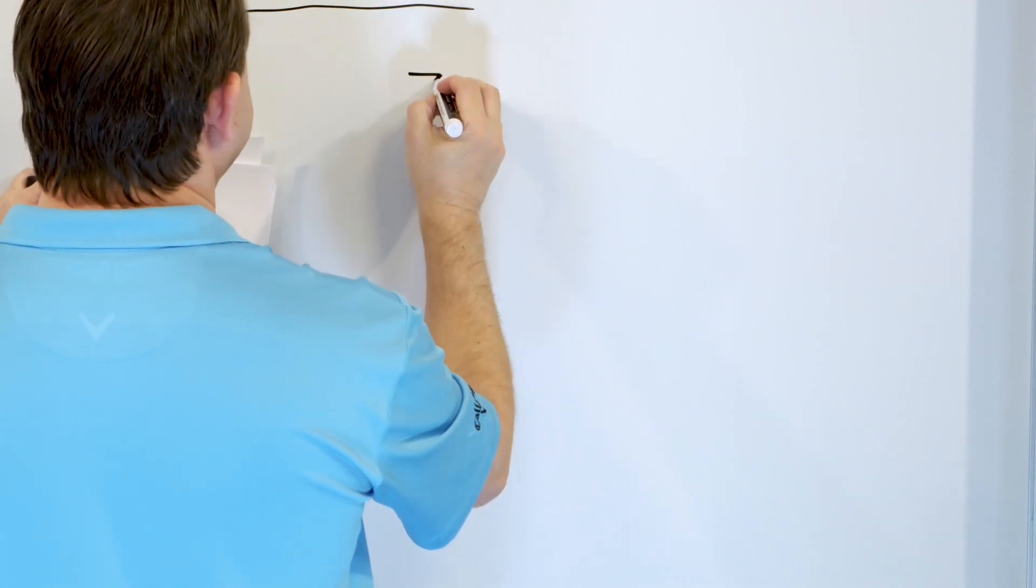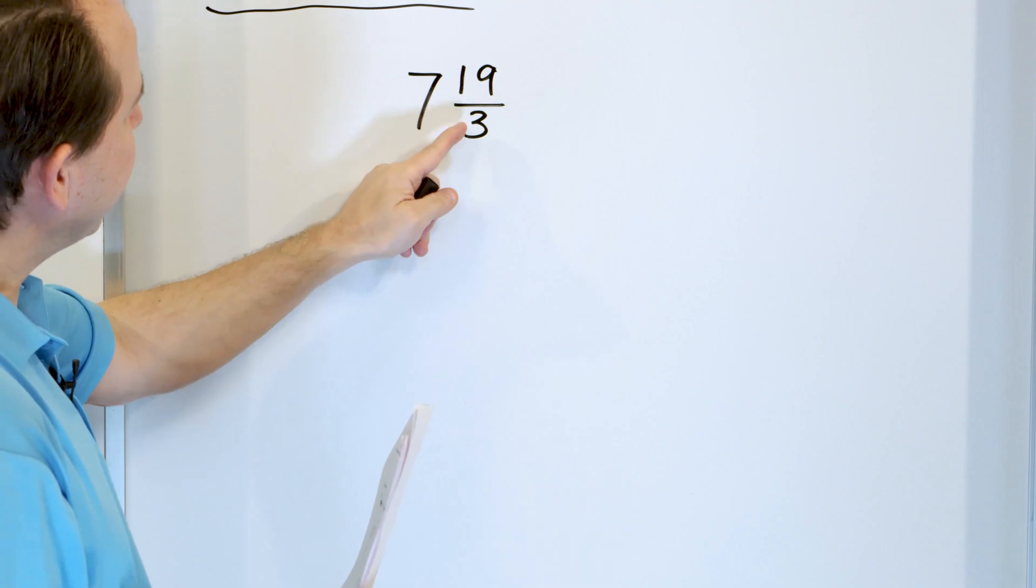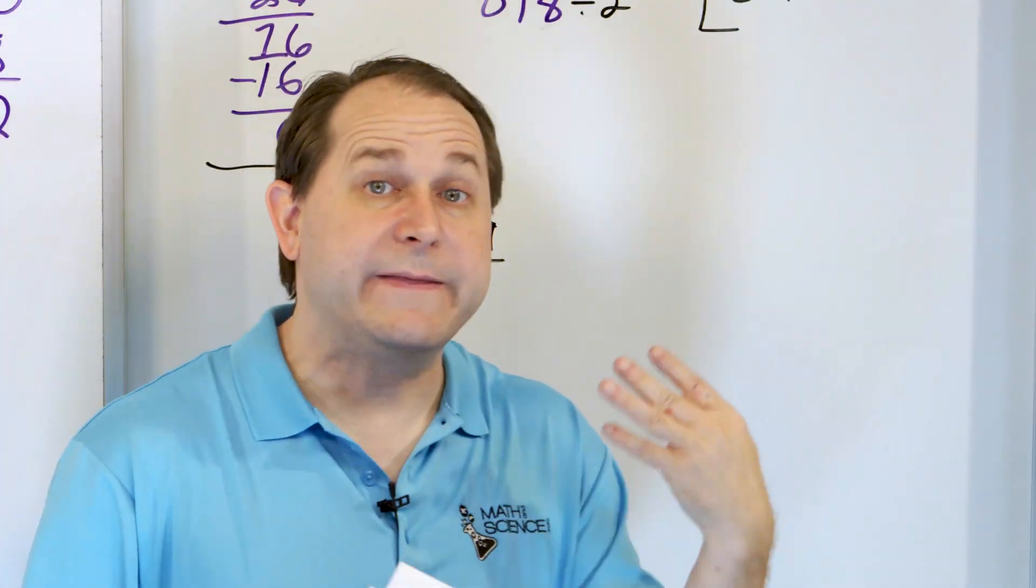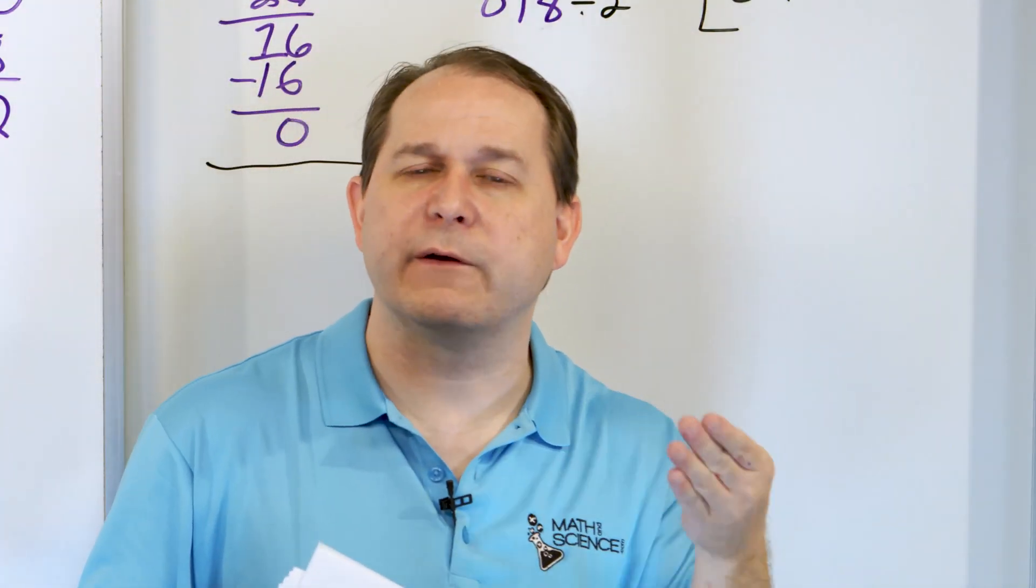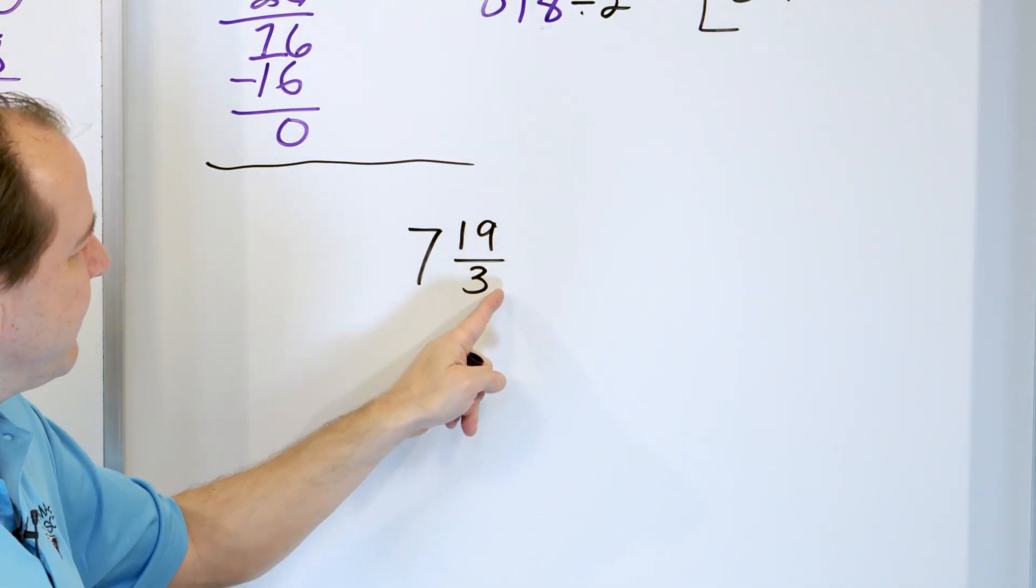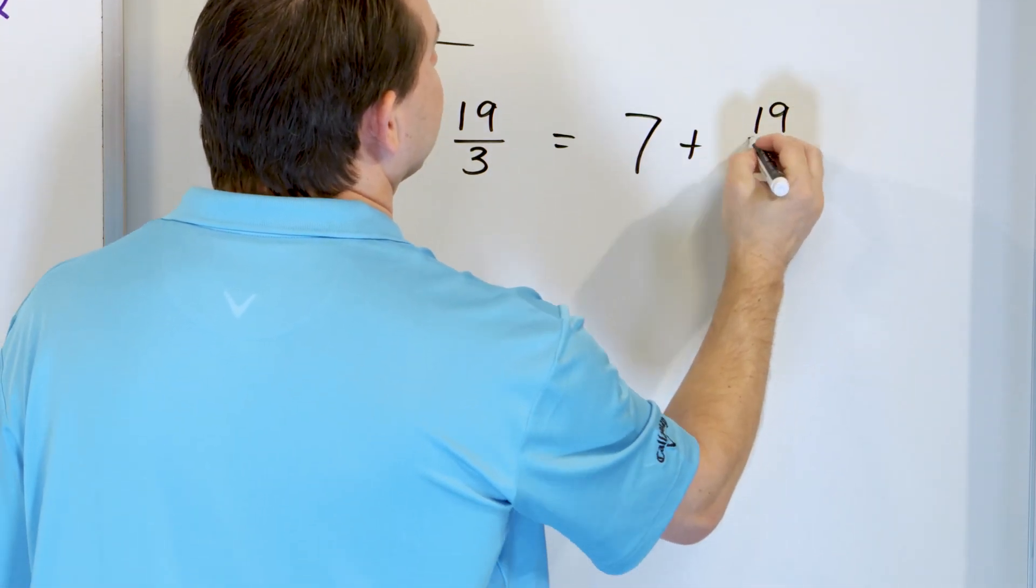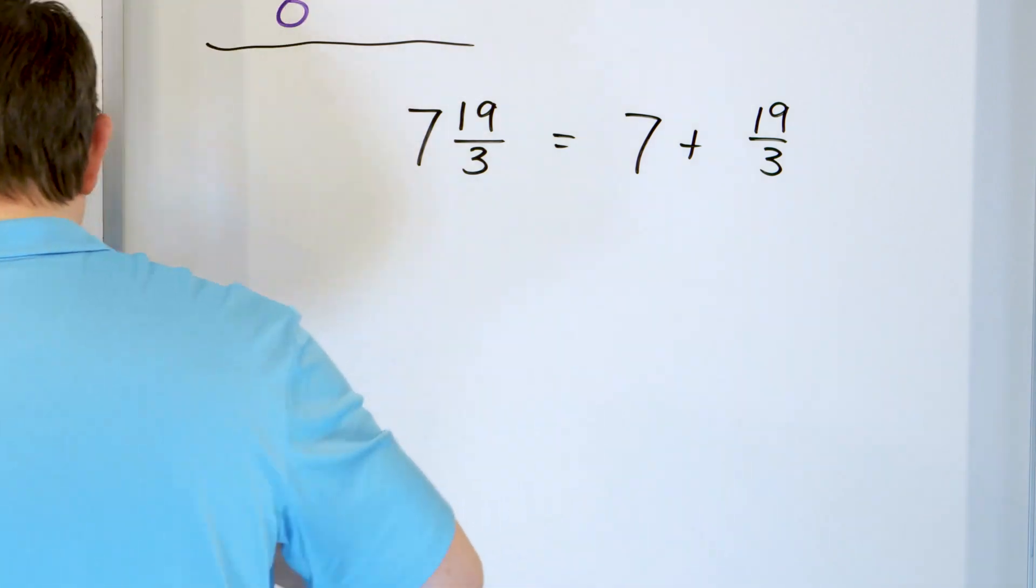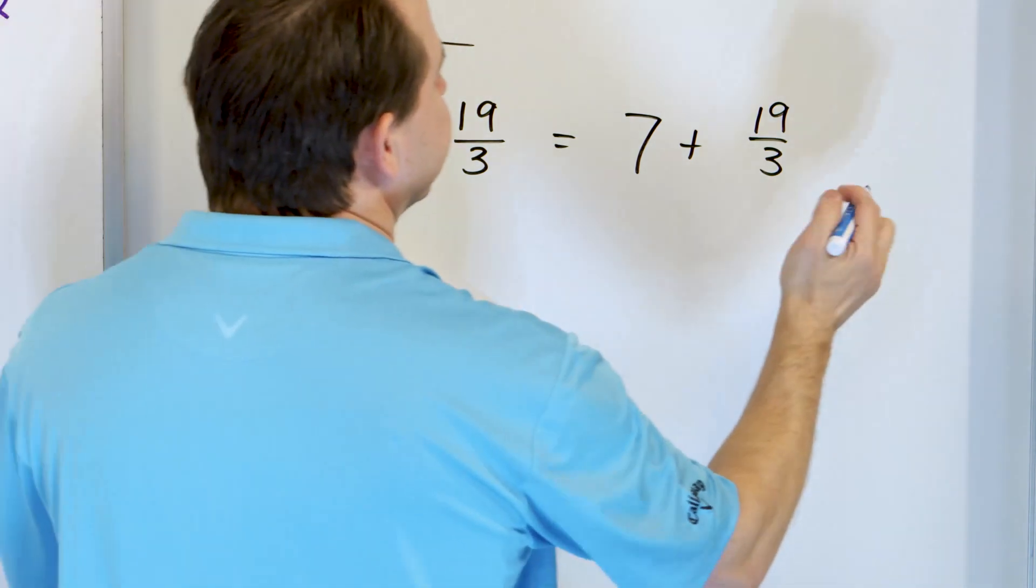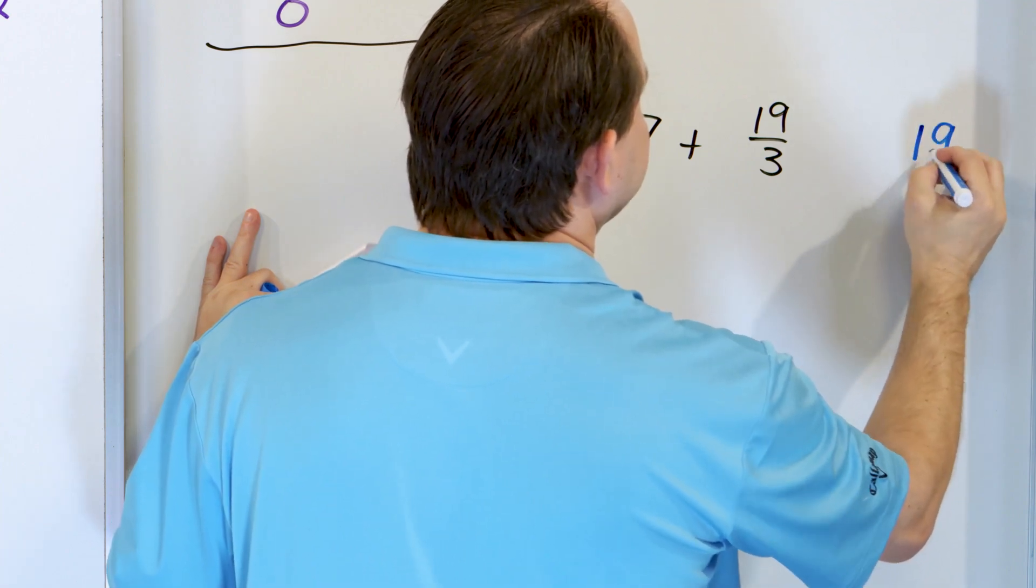Let's take a look at 7 and 19/3rds. Now if you think about it, in terms of the thirds, if I have 3/3rds, three on the top and three on the bottom, 3/3rds is just one whole. But I have 19/3rds, so whatever happens here, this is going to add a lot of wholes. So let's see what happens. 7 plus 19/3rds. We need to figure out what this works out to be in terms of a mixed number. So 19, let's divide it by 3.